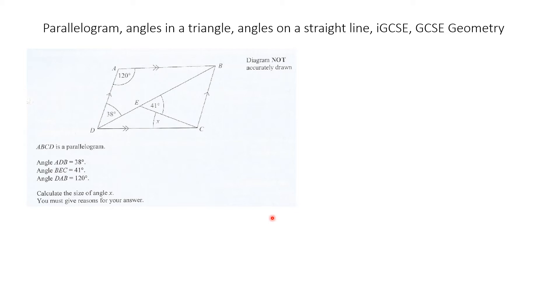It's a bit longer but I think it's easier to explain. Now if the angle at A is 120 degrees, and we know that the opposite angles in a parallelogram are equal, it means that this angle is also 120 degrees.